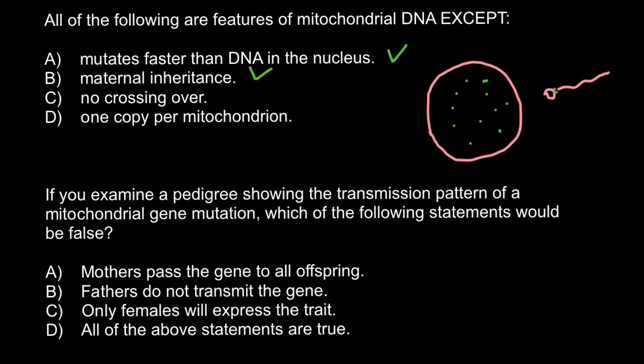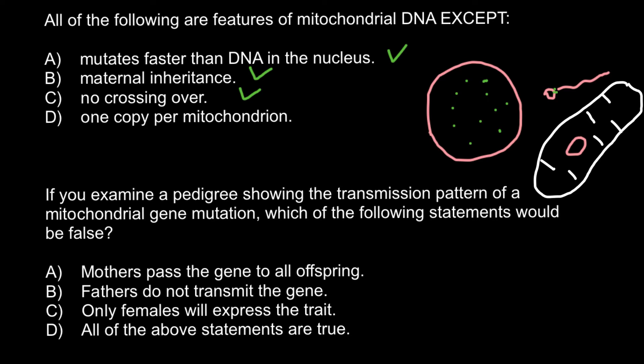Answer C: no crossing over — this is also true, because mitochondrial DNA is circular. We can find many such circular DNA molecules per one mitochondrion. When DNA is circular it does not have a centromere, and during the process of mitochondrial division the circular DNA replicates in the same way as we find in bacteria.